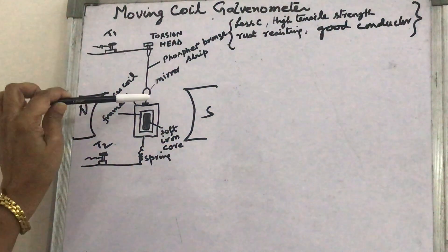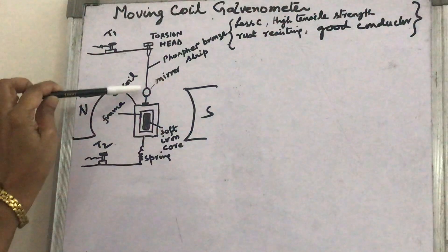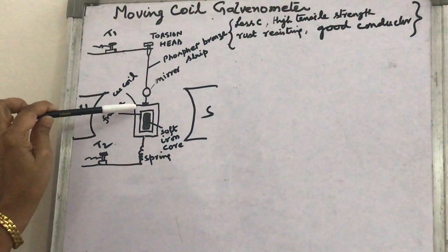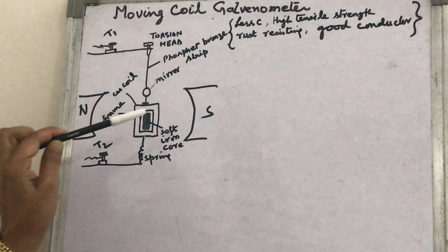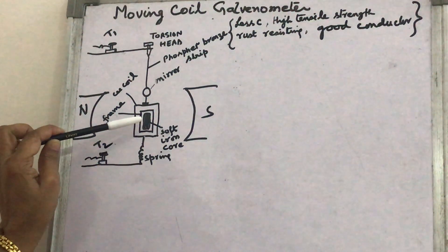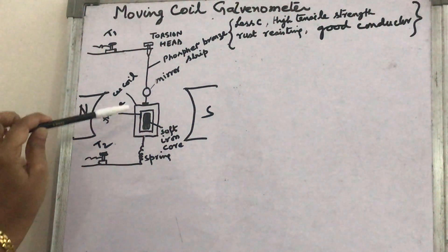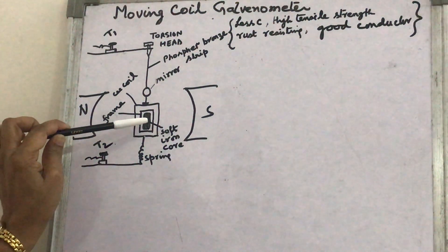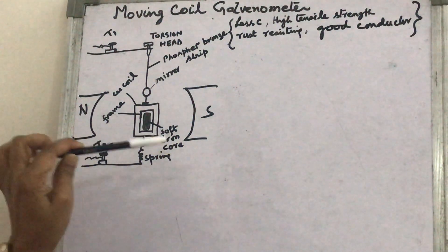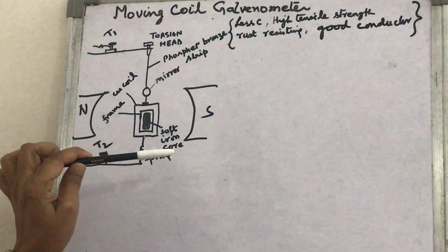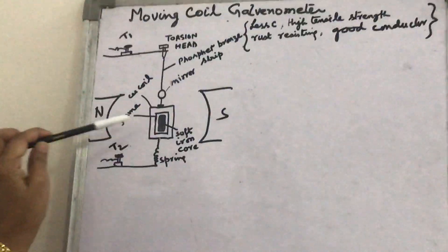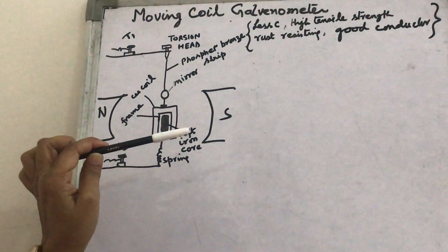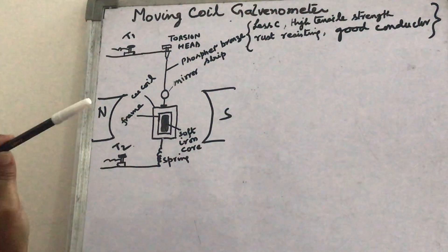Through the phosphor bronze strip, at its lower end a plane mirror is connected, and the copper coil is wound on the aluminium frame. A soft iron core is placed in the middle — not in contact with the frame or coil — and it is useful for maintaining a strong magnetic field. The two poles of the powerful magnet produce a strong magnetic field.